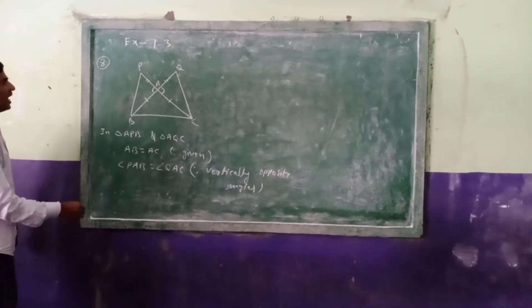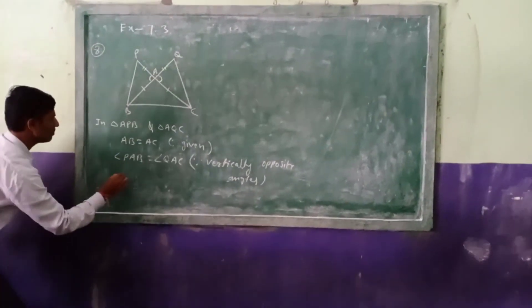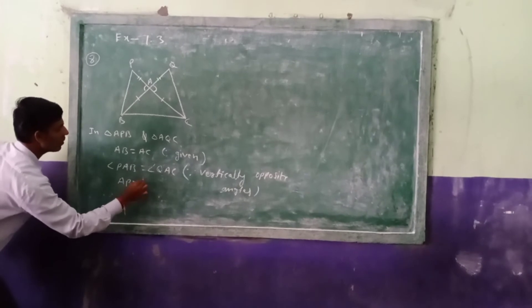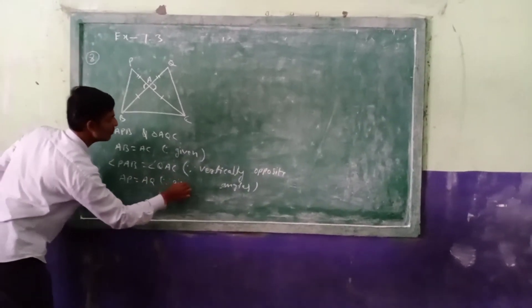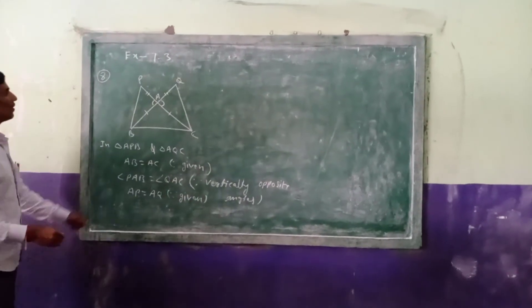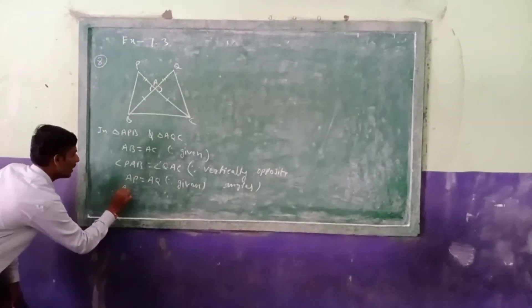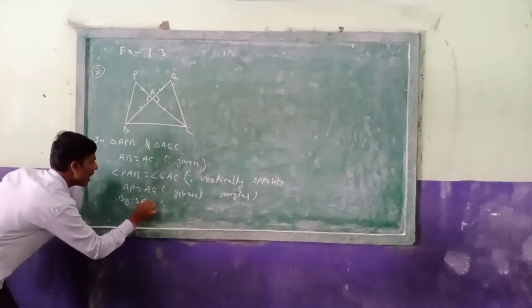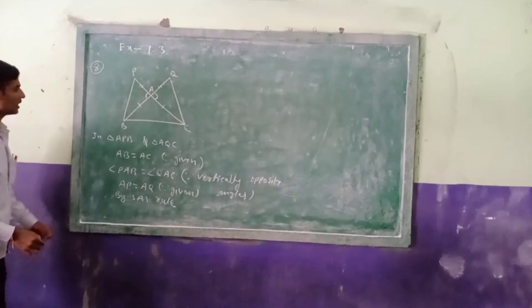Next, again, this they given: AB equal to AQ. Given this one. So, side angle side. By side to angle side to congruency rule.